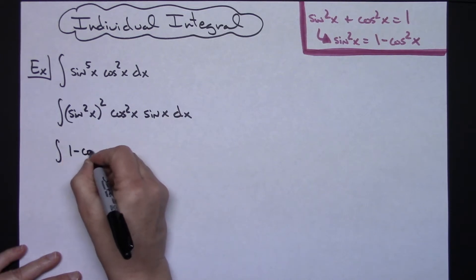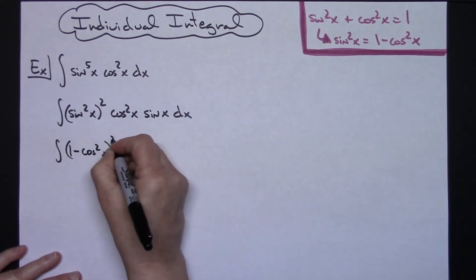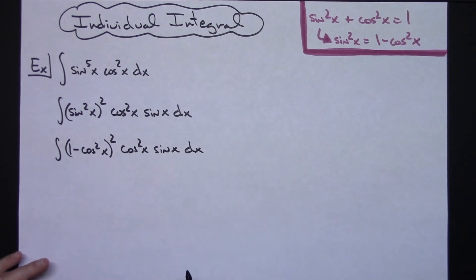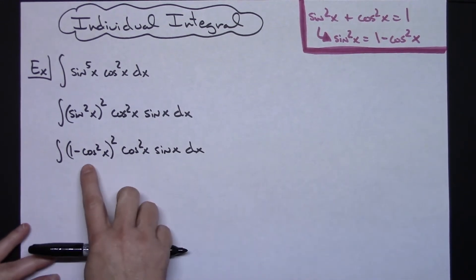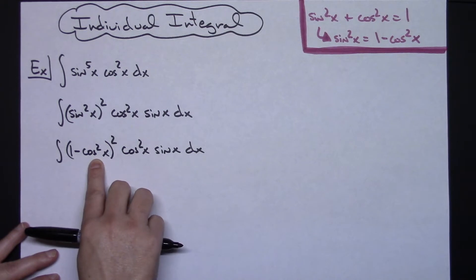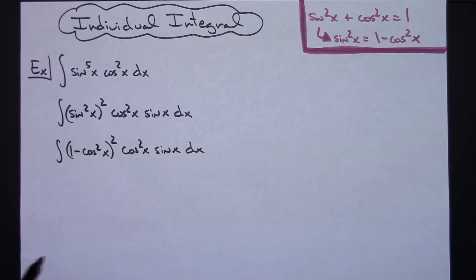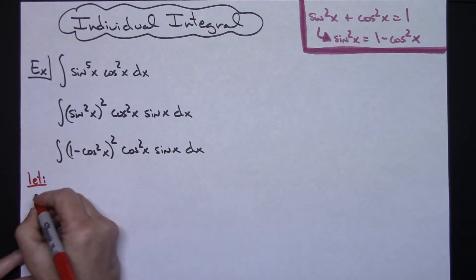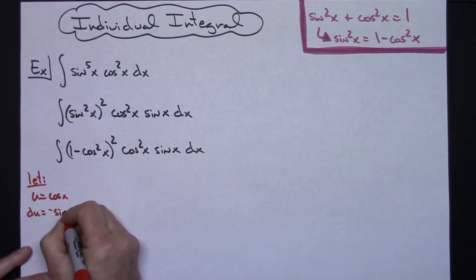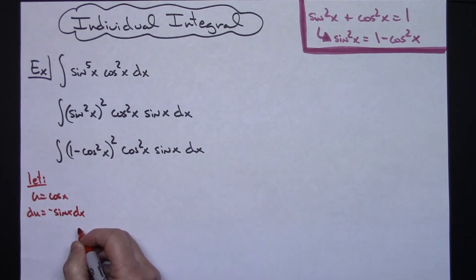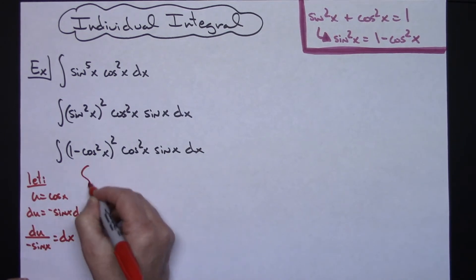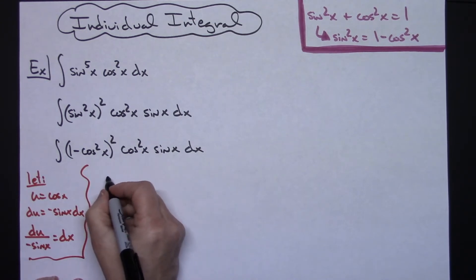Now I can make the substitution of 1 minus cosine squared x for sine squared x, so I'll have the integral of 1 minus cosine squared x quantity squared, times cosine squared x, times sine x dx. At this point I can go to a straight u-substitution. The most inside function is cosine x, so I'm going to let u equal cosine x. Taking the derivative of both sides gives du equals negative sine x dx, so dx equals du over negative sine x.